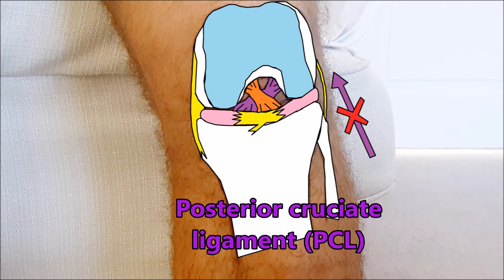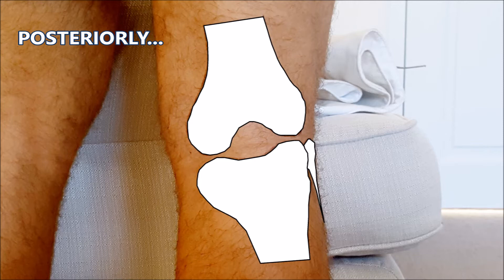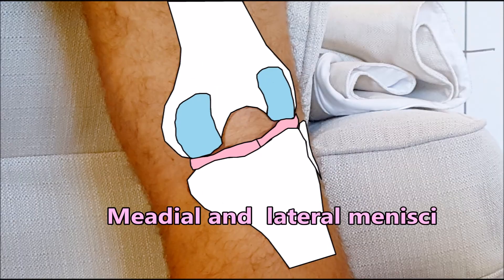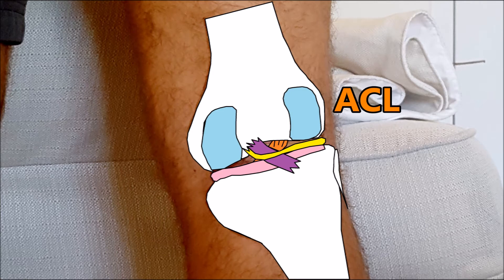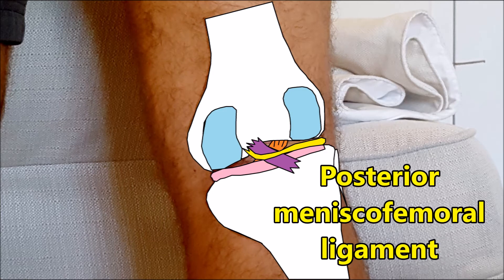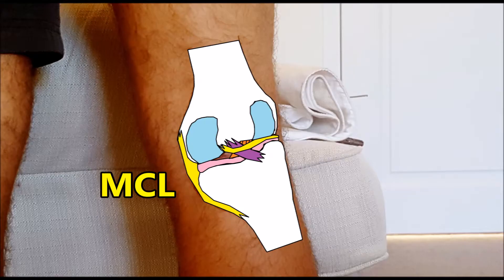The posterior cruciate prevents posterior movement of the tibia. This is a posterior view of the knee showing the medial and lateral femoral condyles, the medial and lateral menisci, the posterior and anterior cruciates, and the posterior meniscofemoral ligament. Here are lateral and medial views of the knee showing the same structures.